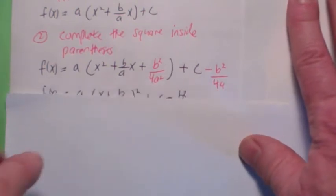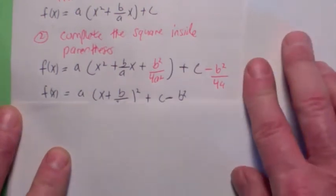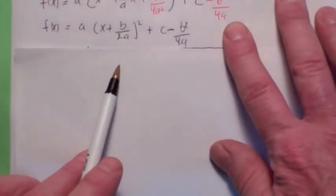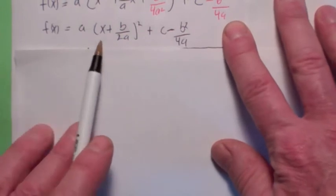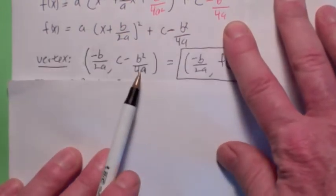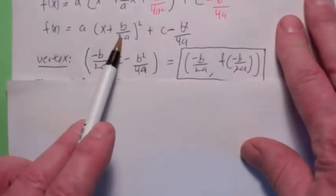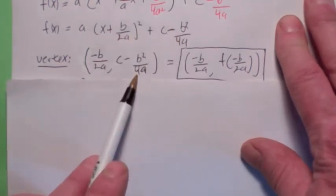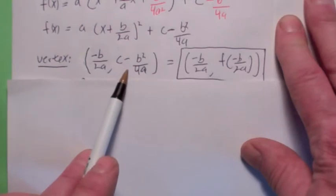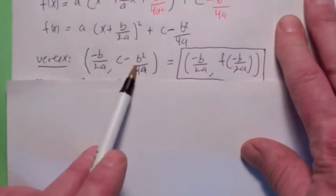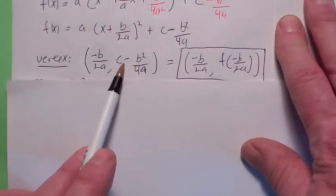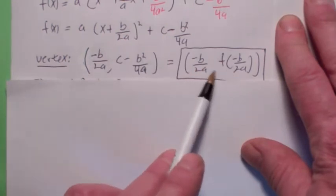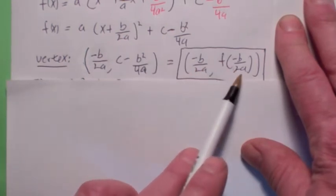You can take a general quadratic function and write it in vertex form by completing the square. The vertex will be at x = −b over 2a, and the vertical shift is c minus b² over 4a. However, you don't even need to remember the y-coordinate formula, because if you know the x-coordinate of the vertex, you can always find the y-coordinate by just plugging that x-coordinate into the function.